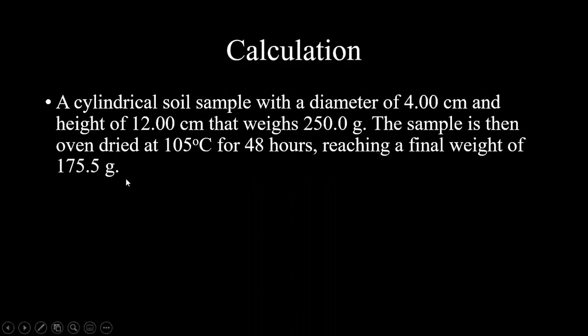Here is a soil sample which we're going to use to calculate bulk density, porosity, gravimetric, and volumetric water content. We have a cylindrical soil sample with a diameter of 4.00 centimeters and a height of 12.00 centimeters that weighs 250.0 grams. The sample is oven dried at 105 Celsius for 40 hours, reaching a final weight of 175.5 grams.